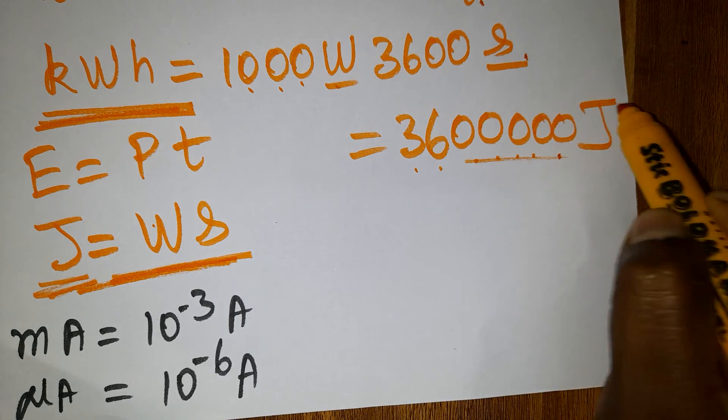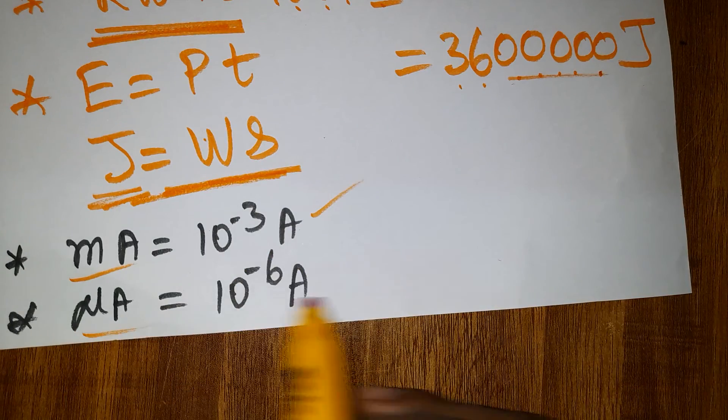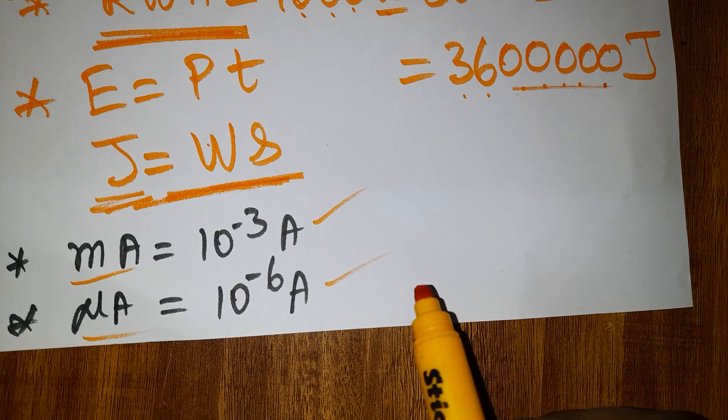Milliampere is 10^-3 amperes, microampere is 10^-6 amperes. Thank you.